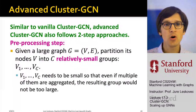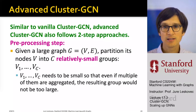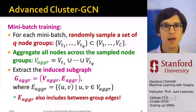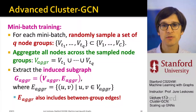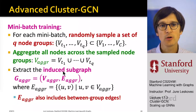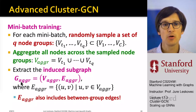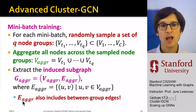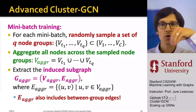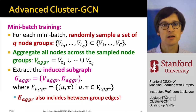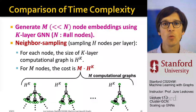This is again a two-step approach. We separate nodes into very small subgroups — much smaller than in the original version. During mini-batch training, we sample multiple groups of nodes, aggregate them into one supergroup, create an induced subgraph on the entire supergroup, and include edges both within and between the small subgroups. Then we perform Cluster GCN the same way as before.